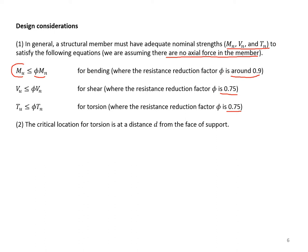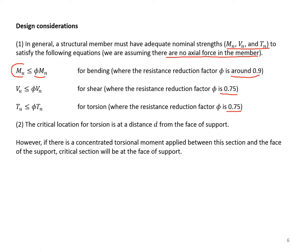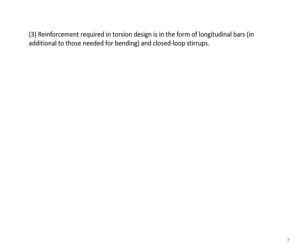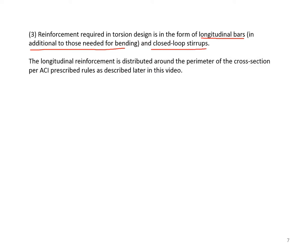The critical location for torsion is at the distance d from the face of the support. However, if there is a concentrated torsional moment applied between this section and the face of the support, the critical section will be at the face of the support. The parameter d is the effective depth of the cross section — the distance from the center of tension steel to the extreme compression fiber. Reinforcement required in torsion design is in the form of longitudinal bars in addition to those needed for bending, plus closed loop stirrups.